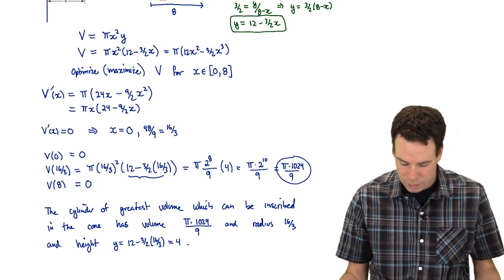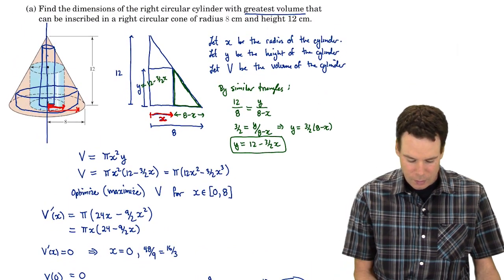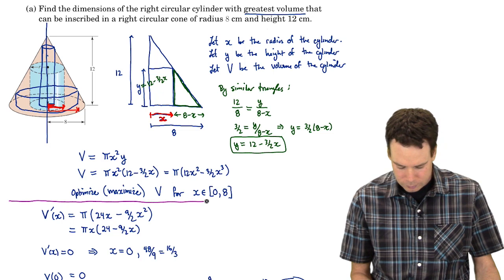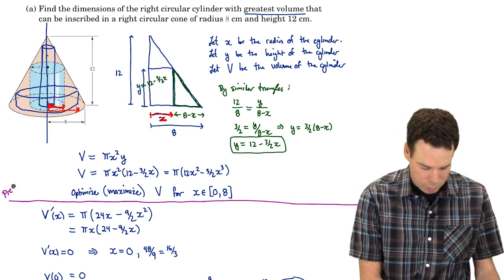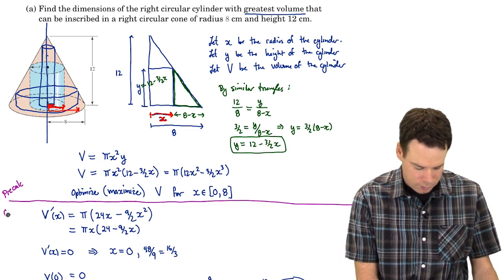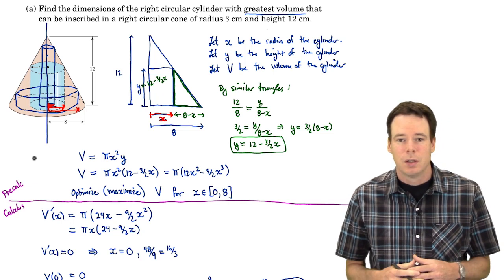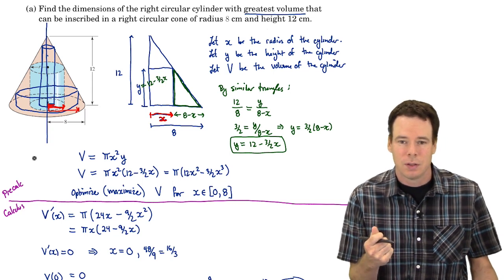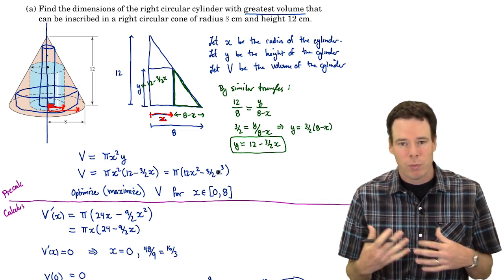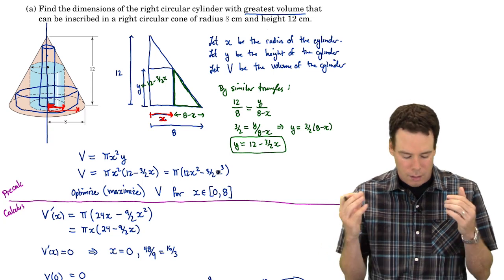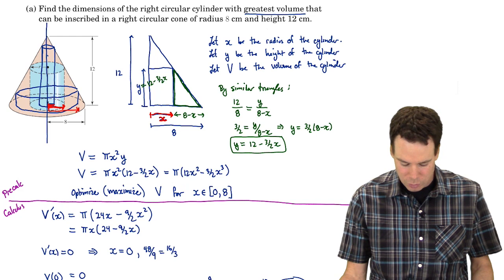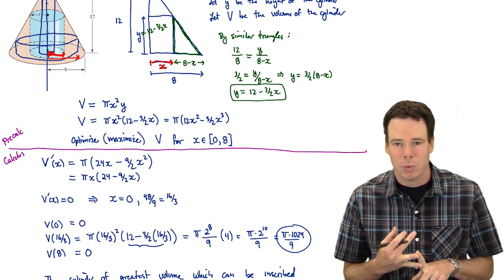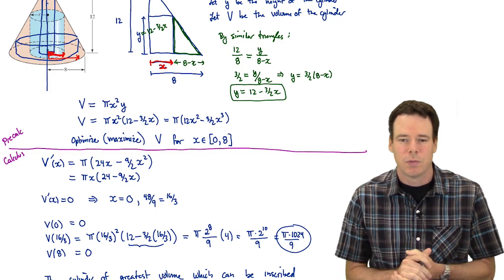The first part of the problem — working out the volume function and figuring out what to optimize — was the precalculus setup, finding what we call the objective function. Then below that line was the calculus: the optimization techniques for finding maximum and minimum, looking at critical numbers, comparing with endpoints. You'll find that often the trickiest part of homework problems is getting that function set up. Once you have it, the calculus is mechanical — find critical numbers, compare at the endpoints.